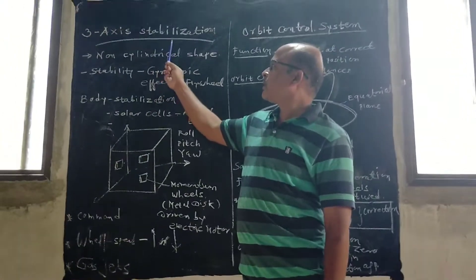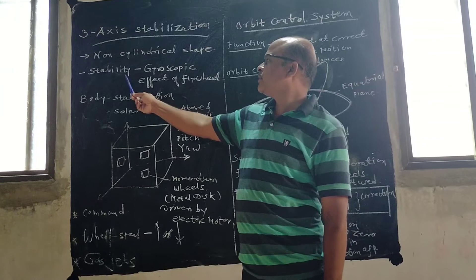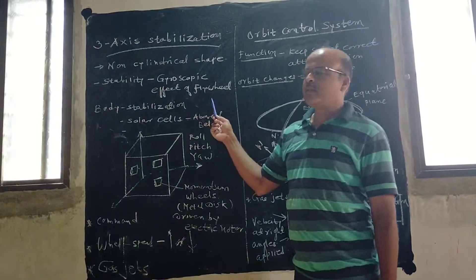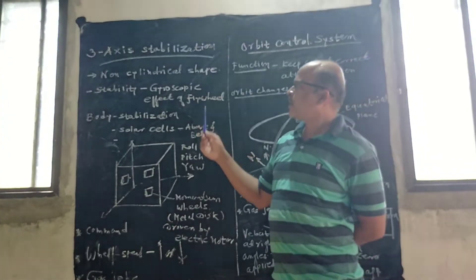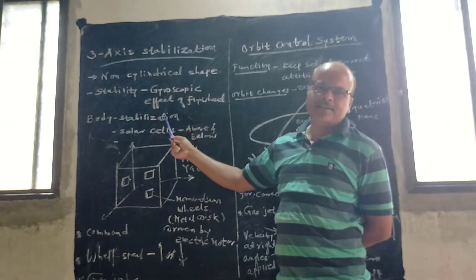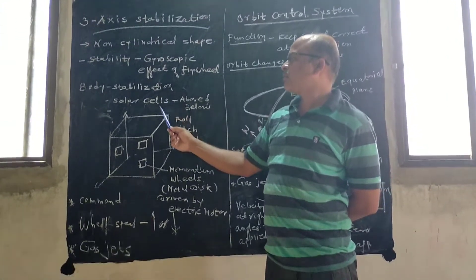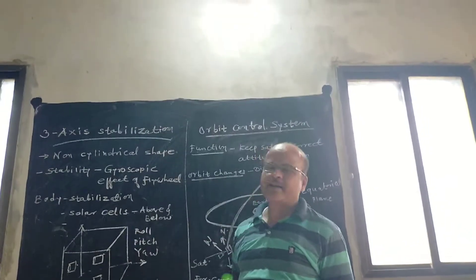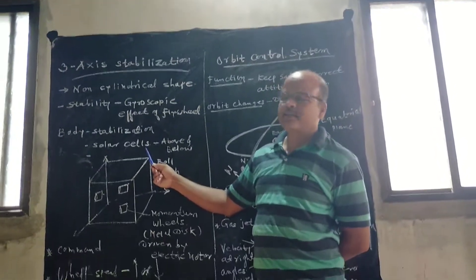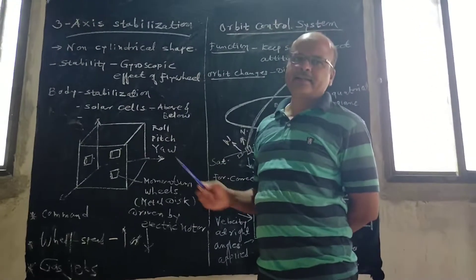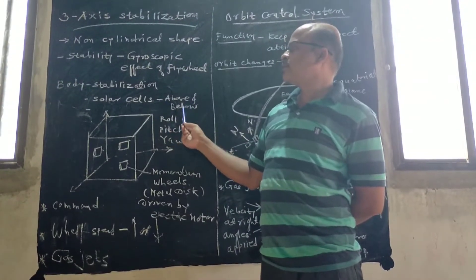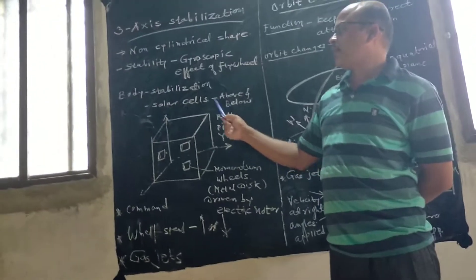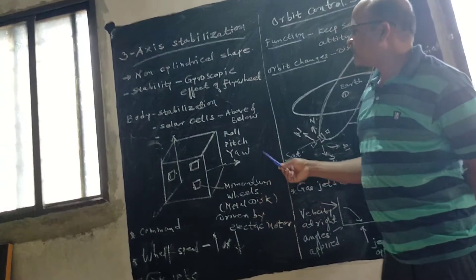And this three-axis stabilization here, stability is generally due to the gyroscopic effect of a flywheel. Generally, in this three-axis stabilization, first is the body stabilization. And this body stabilization, what is body stabilization? Generally, for power supply of satellites, solar cells are provided. And these are the rectangular shaped solar cells, above and below of that satellite. And if we use these solar cells, and stabilization is provided with above and below the satellite, then it is called as body stabilization.